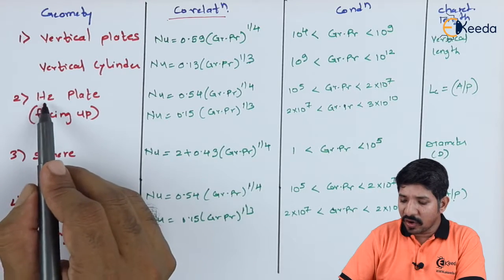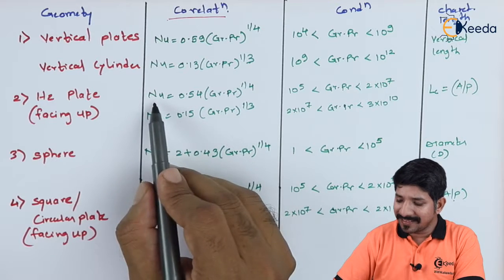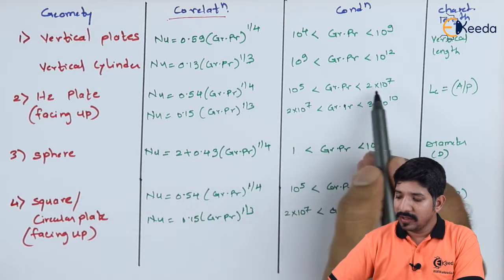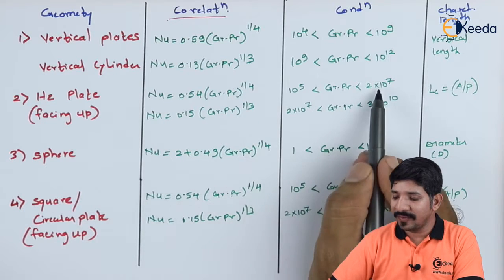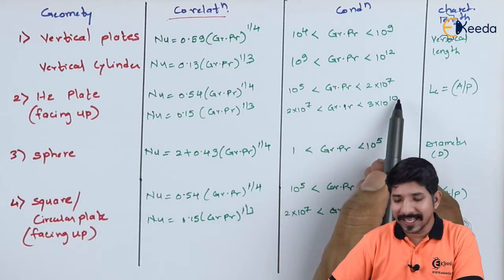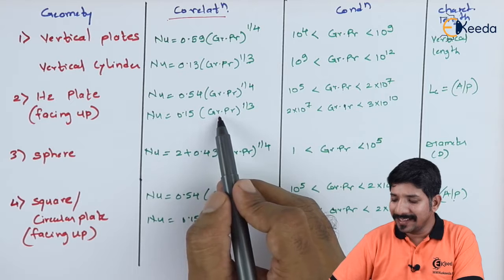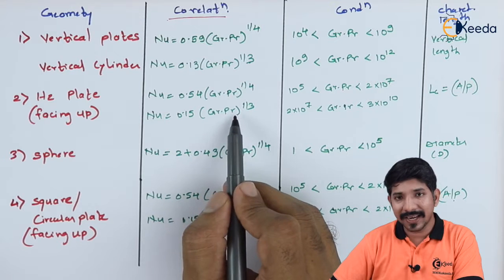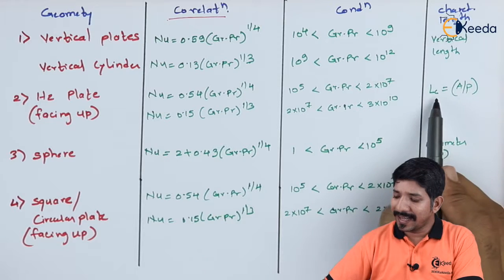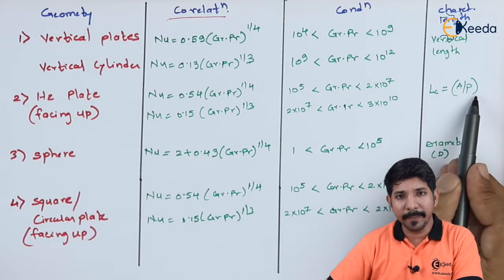For a horizontal plate with the face up, the Nusselt number is given as 0.54 times Rayleigh's number raised to 1/4, applicable for Rayleigh's number between 10^5 and 10^7. If it is between 10^7 and 10^10, the Nusselt number is given as 0.15 times (Gr · Pr) raised to 1/3. In this case the characteristic length is given by area divided by perimeter, that is A/P.